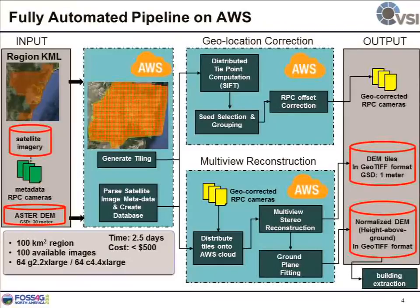We went to Amazon Cloud, and it turns out that's a good solution. In the end, we developed a fully automated pipeline on Amazon Cloud. The user just needs to upload their satellite images onto an S3 bucket, circle the region where they want the DSM to cover, and launch the pipeline. Wait a few days, and you have the DSM on the S3 bucket.